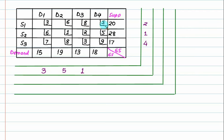Lowest cost is 5, next cost is 5, penalty is 0. Highest penalty is 5, so we'll enter through this column. In this column the lowest cost is 1 — allocate maximum, we can allocate 19. 19 is struck out; we are left with 9 because of this. Column number 1 you have to strike out.